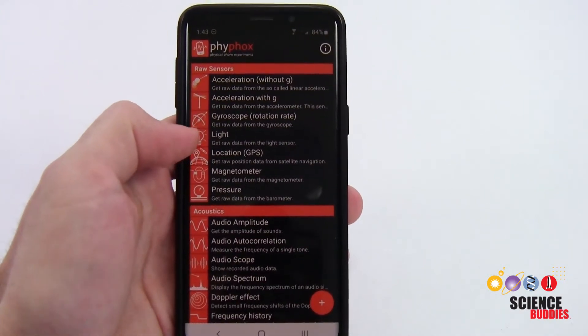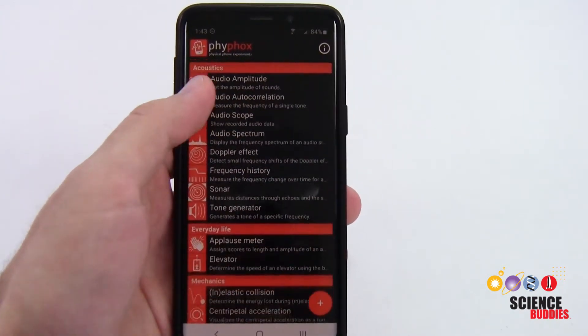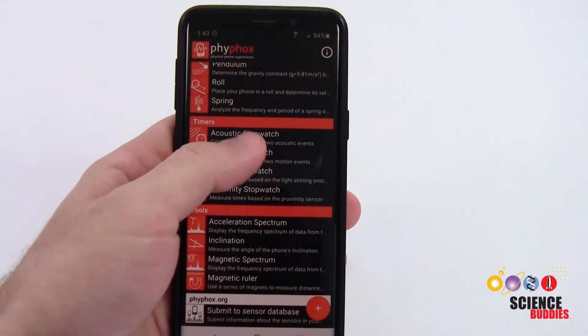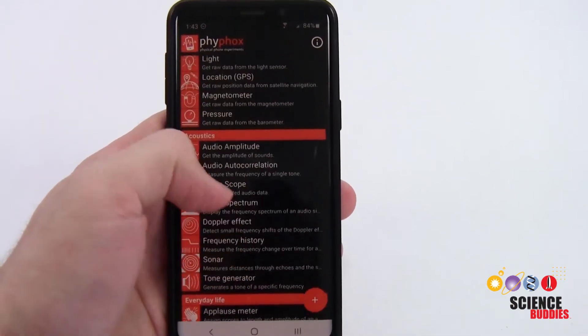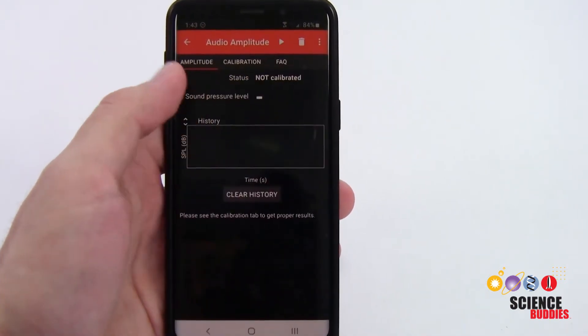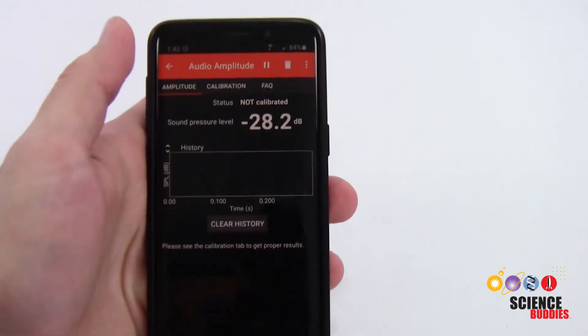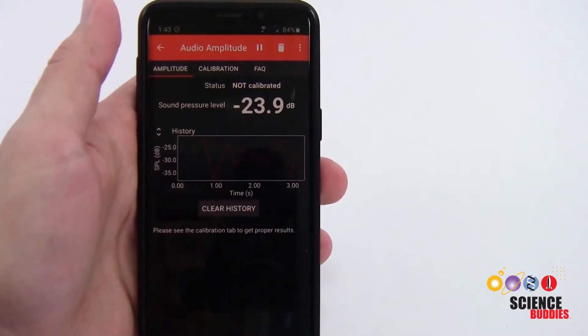Hi, this is Dr. Ben Finio with Science Buddies, and in this video I will show you how to use and calibrate the audio amplitude sensor in Firefox, a smartphone app that lets you visualize and record data from various sensors that are built into your smartphone.